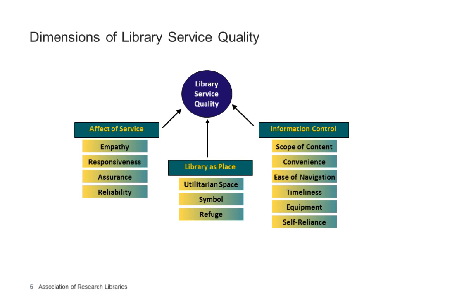Foundational LibQual research identifies three dimensions of library service quality. Affect of service measures the interpersonal dimension of library service, including aspects of empathy, responsiveness, assurance, and reliability. Library as place measures how the physical environment of the library is perceived in pragmatic, utilitarian, and symbolic terms, and encompasses aspects of the library as a refuge. Information control measures service quality in terms of content and access to information resources, including the scope of content offered, convenience, ease of navigation, timeliness, equipment availability, and self-reliance.